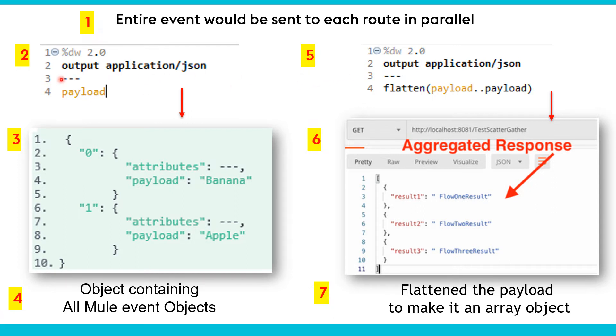When we use payload, it prints multiple objects. If you see here, zero colon, after that it is a complete Mule event object having attributes, payload, and other details. Similarly, this is another object, one, having attributes and payload.